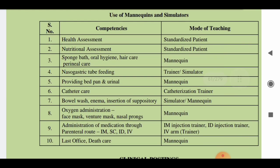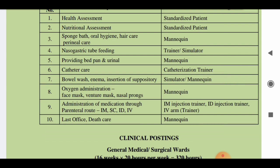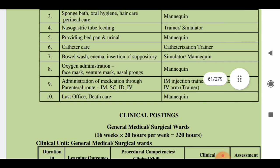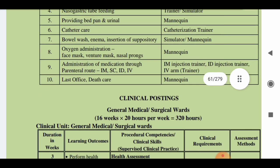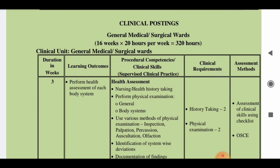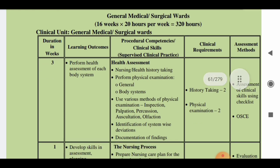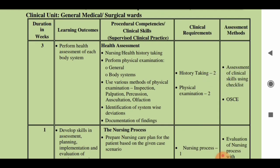In the skill lab, various mannequins and simulators are used for learning. Skills practiced include health assessment, nutritional assessment, sponge bath, oral hygiene, nasogastric tube feeding, bedpan and urinal care, catheter care, bowel wash, oxygen administration, and administration of medicines through various routes including parenteral, intramuscular, subcutaneous, intradermal, and intravenous methods. There are 16 weeks of clinical posting at 20 hours per week in general medical-surgical wards in the second semester.